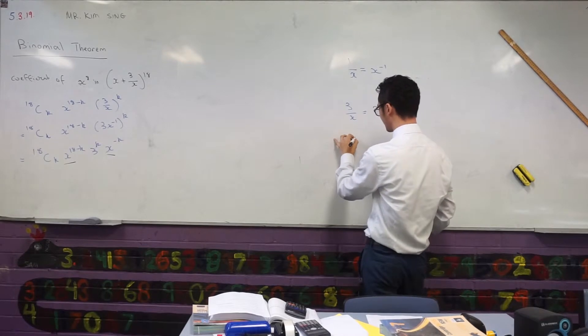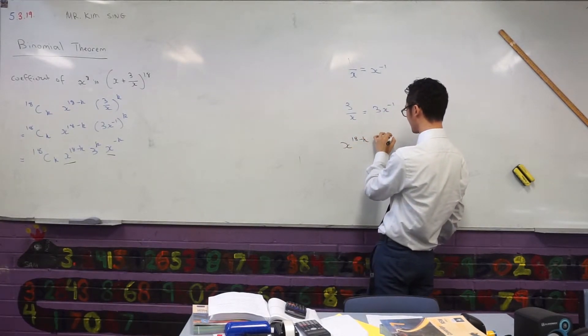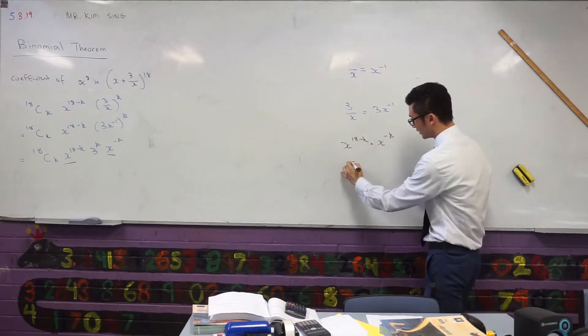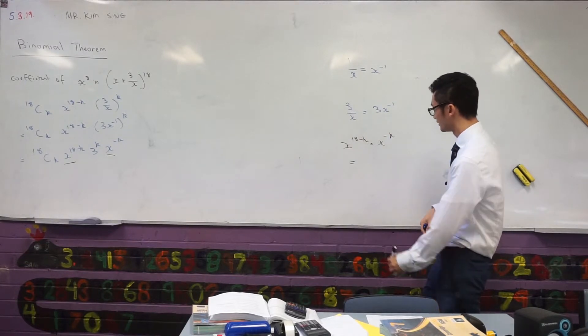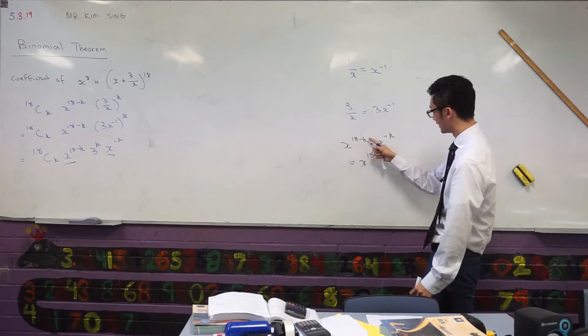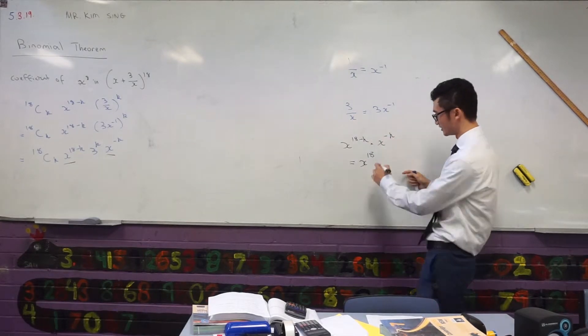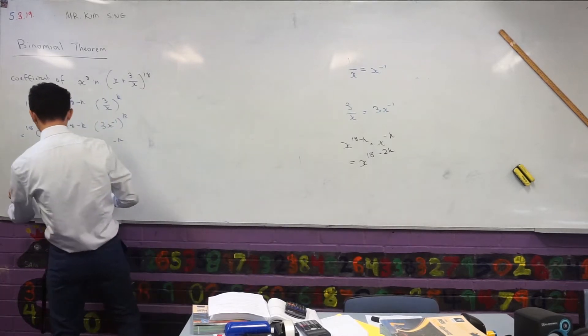I've got x to the power 18 minus k multiplied by x to the power minus k. And remember when I multiply two terms, when I do that, I have to add the indices, right? But that would just be x to the power 18 minus k plus minus k, that's just negative 2k. So I can bring that all together and I have this expression.